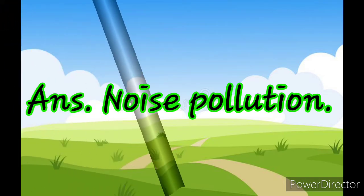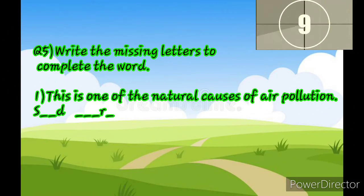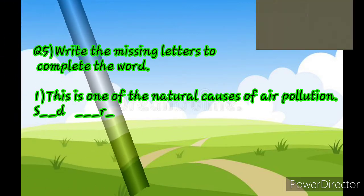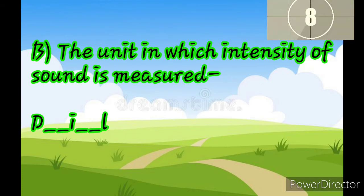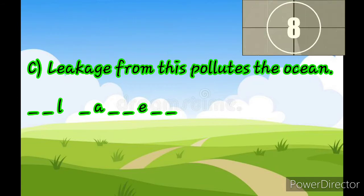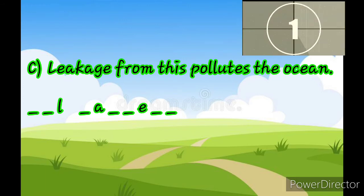Now the next question: write the missing letters to complete the word — this is one of the natural causes of air pollution. The answer is for you to guess. Next: the unit in which intensity of sound is measured — you can see the dashes, think of the answer. Next: leakage from this pollutes the ocean — so what pollutes the ocean by leakage?